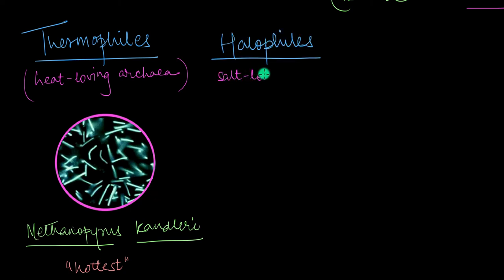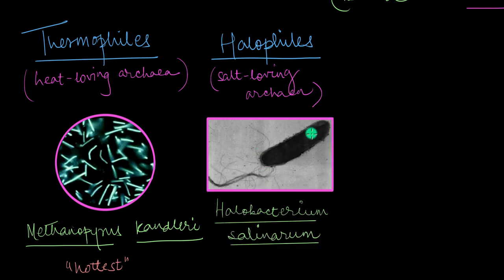Salt loving archaea are called halophiles. These salty fellows are found in any place with very high salt concentrations. Most organisms would die there, but our beloved halophiles, they will thrive. A very common halophile is this archaea called halobacterium salinarum.